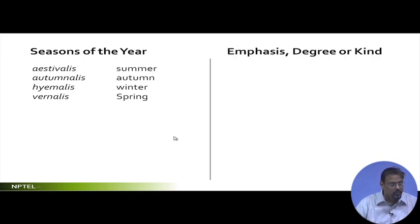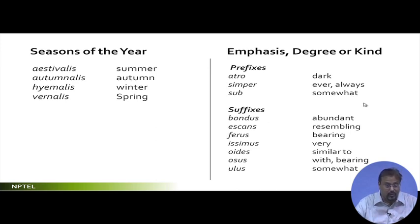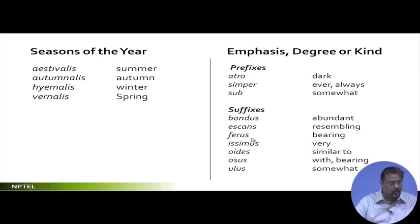In terms of emphasis, degree, or kind: if it is used as a prefix, atro means dark, semper means ever or always, sub means somewhat. In terms of suffixes: -bundus means abundant, -ascens means resembling, -fer means bearing, -issimus means very, -oides means similar to, -osus means with or bearing, -ulus means somewhat.